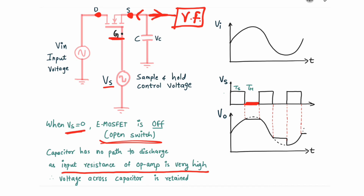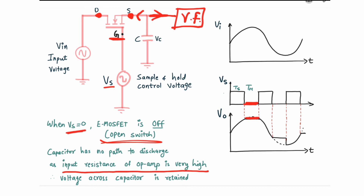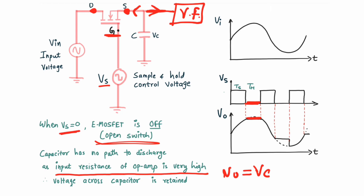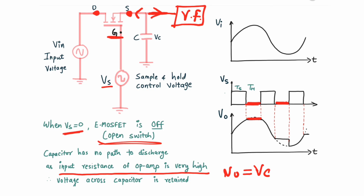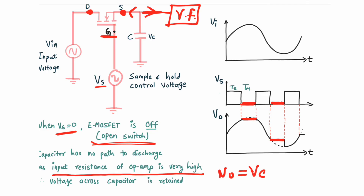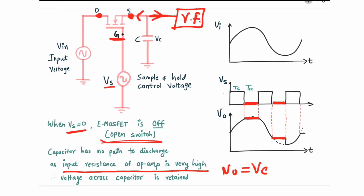Since the capacitor has no path to discharge, it will hold its charge and retain it. Until the next positive pulse, it holds its charge, so the output remains equal to Vc, which holds the last sampled voltage value. When Vs goes positive again, the MOSFET turns back on and the output follows the input once more. This is how the sample and hold circuit samples your input signal.